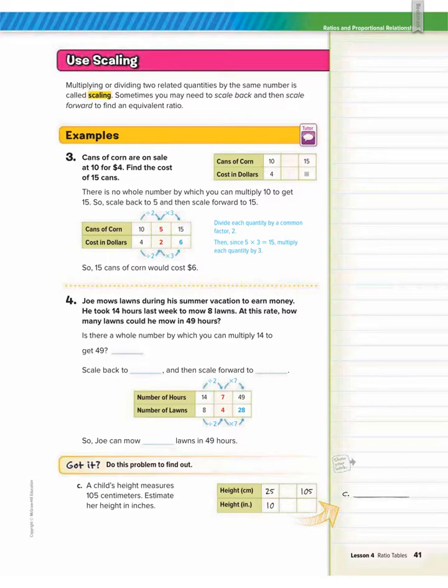Now on the top of page 41 we're going to talk about scaling. If you multiply or divide two related numbers by the same number, that's called scaling. Sometimes you may need to scale backwards and then scale forward to find an equivalent ratio. So that means sometimes you might need to simplify a ratio and then multiply the ratio to get equivalent ratios, and we're going to do examples of this next.